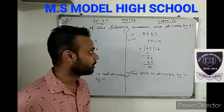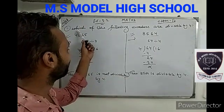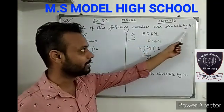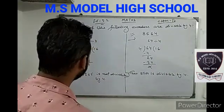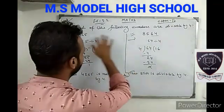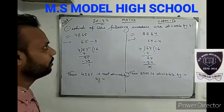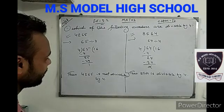Good afternoon students. Today we are going to solve this type of question. There is given which of the following numbers are divisible by 4. This means that the number given is divisible by 4. So in which way we will solve?